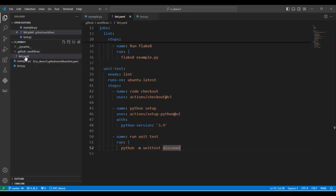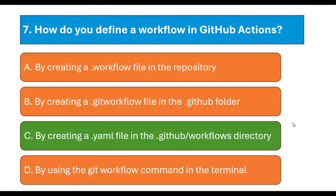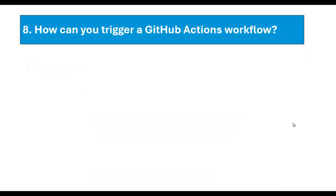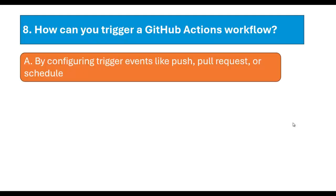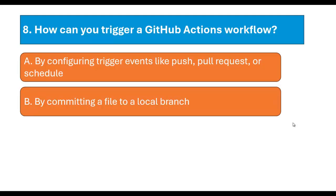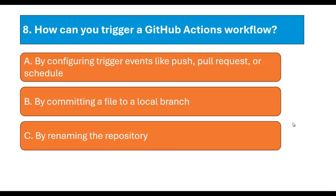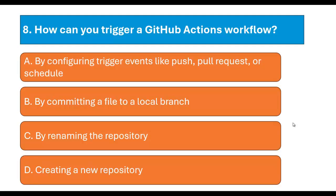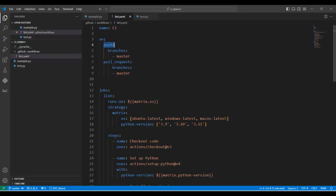Question number 8: How can you trigger a GitHub Actions workflow? Option A: By configuring trigger events like push, pull request, or scheduled. Option B: By committing a file to a local branch. Option C: By renaming the repository. Option D: Creating a new repository. The correct answer is Option A. In VS Code you can see 'on: push' and 'on: pull_request' — our workflow is triggered on push and pull request on the master branch.